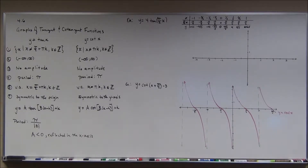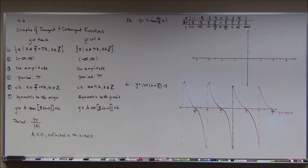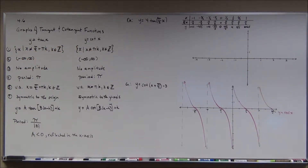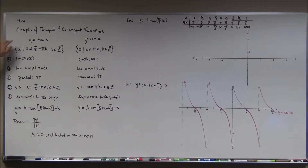Let's finish out section 4.6. We've been looking at the graphs of the secant and cosecant functions, and just within the last video we started looking at the graphs of the tangent and cotangent functions. In the last video we went over the graphs of the parent functions. Now I want to look at transformations to the graph: vertical stretching and shrinking, horizontal stretching and shrinking, and of course vertical and horizontal translations.